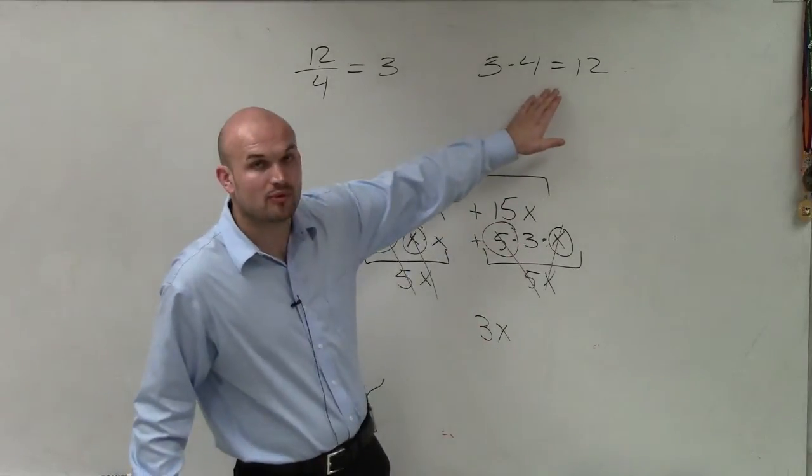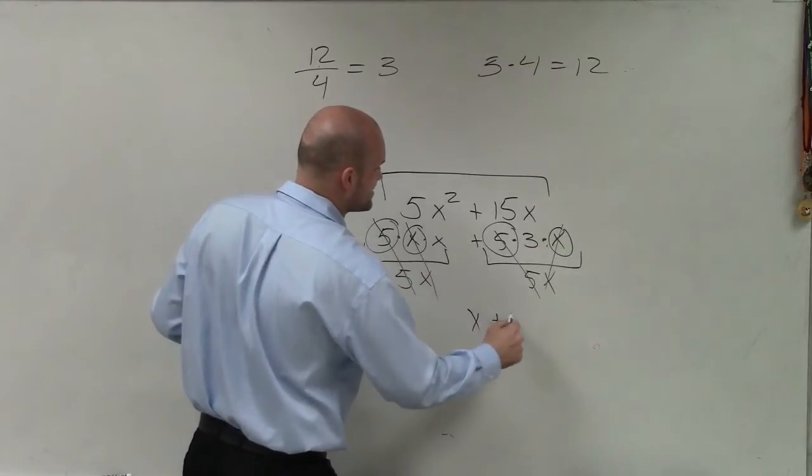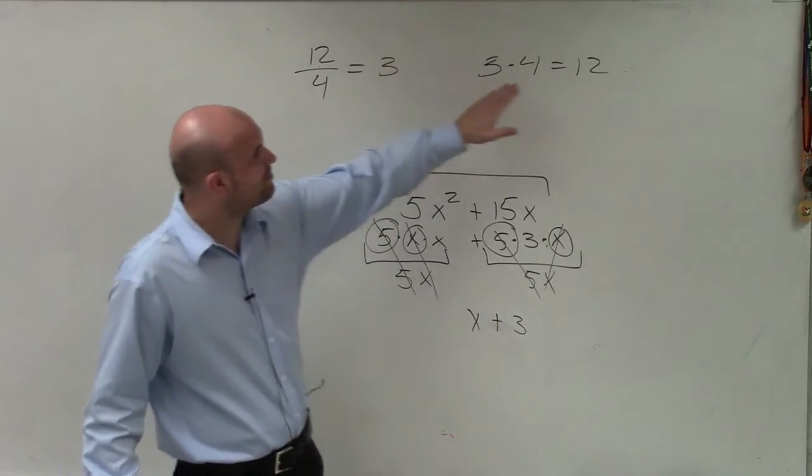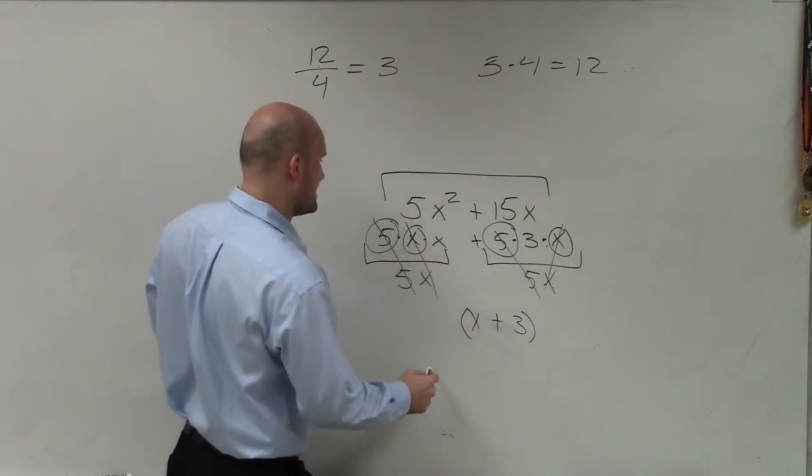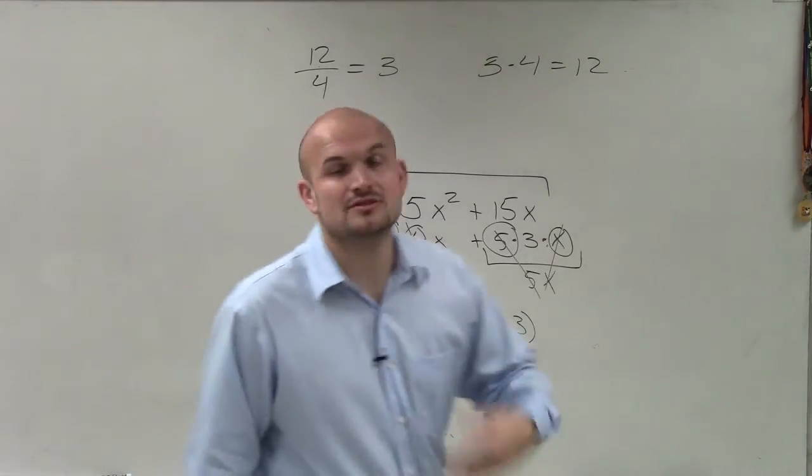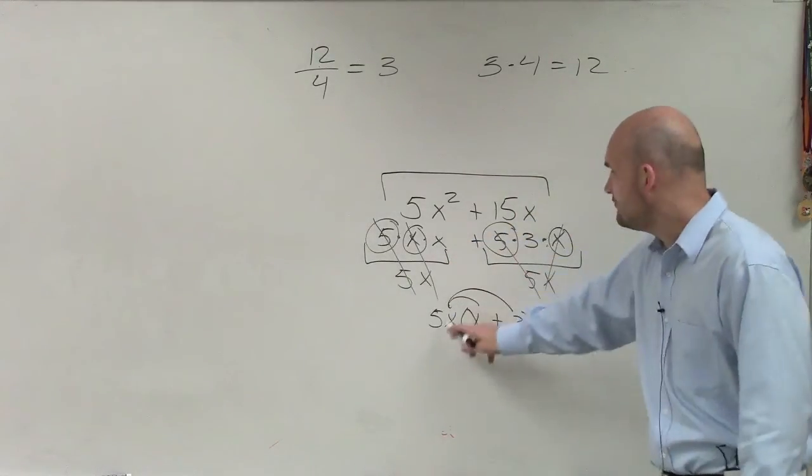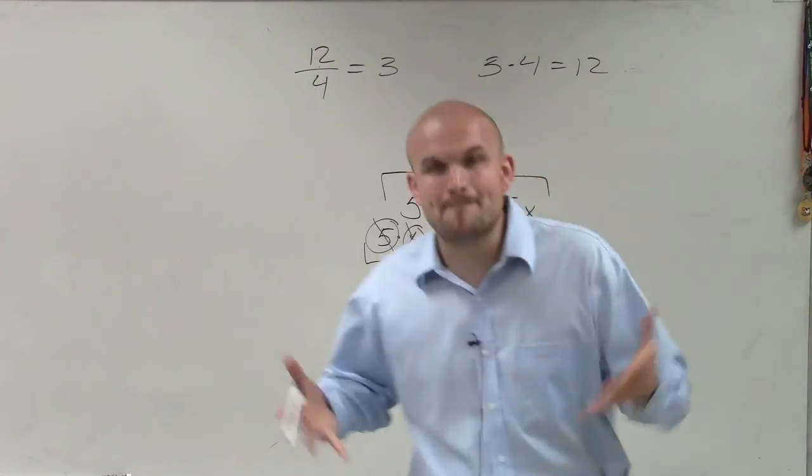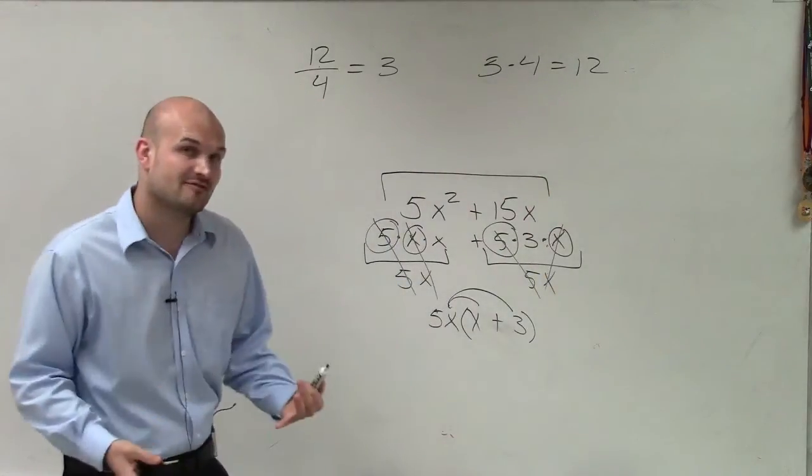But if I want to rewrite my quotient as a product, I've got to rewrite it as what I divided out by. So it would be x plus 3 times 5x. So that is how I factor out using our GCF method. And you can always check your work by applying the distributed property. 5x times x is 5x squared. 5x times 3 is 15x. So that's really the basics of factoring, and we're going to get into a lot more complicated factoring.